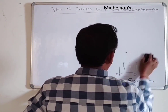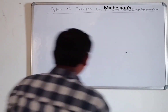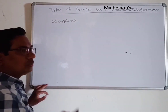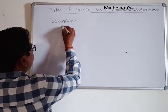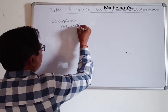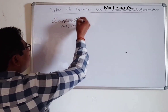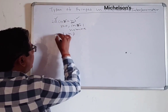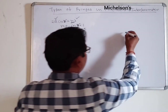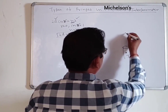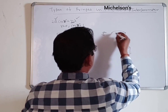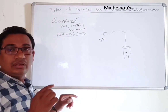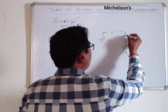The path difference is 2d cos θ = nλ for bright fringes, and 2d cos r = nλ for dark fringes. When r = 0, cos r = 1 (maximum), so 2d = nλ, meaning the order n is maximum at the center. As you move outward from the center, the order decreases.